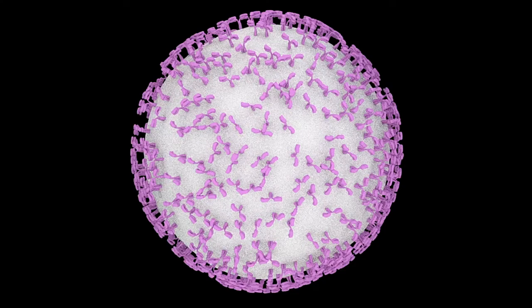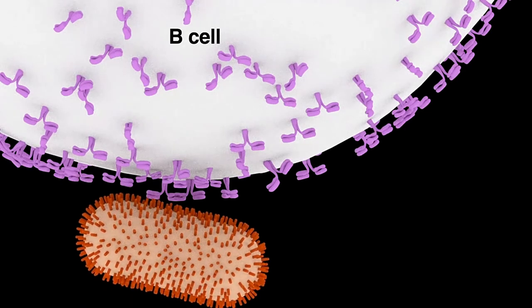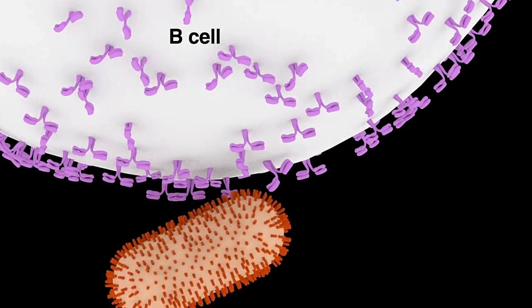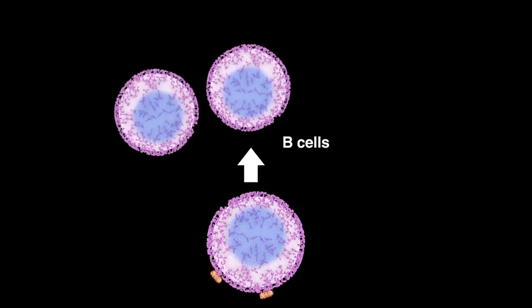Antibodies are first expressed on the cell membrane of immature or naive B cells that have not yet encountered antigens. Recognition of the antigen by an antibody leads to B cell activation which results in its differentiation and clonal expansion.